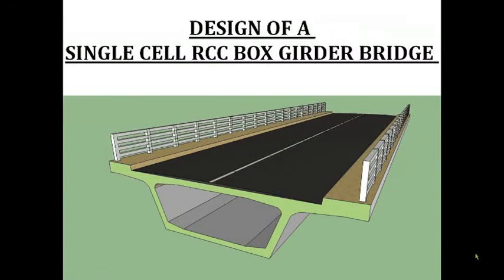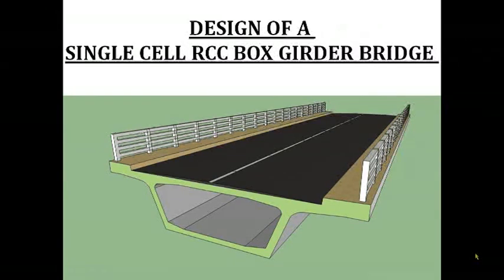Hello everyone, welcome to the video presentation on design of a single-cell RCC box girder piece. We have drawn a 3D model of the superstructure that we are going to design today, which you can see on the screen. We will use the computer-aided modeling software SAP 2000 version 15 and 15.2. With these softwares, we will try to obtain the values of design moment, shear and torsion, and later we will calculate the reinforcement manually.